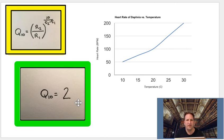So what does that really mean? That means that over 10 degrees, it is going to change by a factor of 2. In other words, every 10 degrees, the metabolic rate, in the case of the heart rate beats per minute of Daphnia, is going to double. If the Q10 was 1, that means that it stayed the same. If the Q10 was 4, that means that it quadrupled.